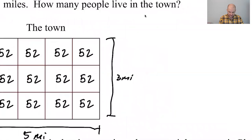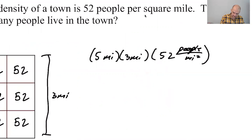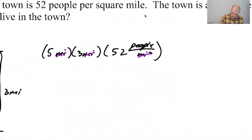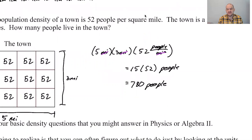So if I want to find the total number of people in this town, I'm going to do five miles times three miles times 52 people per square mile. Look at the units. Follow the units. Miles times miles is miles squared. Cancels with miles squared. We get 15 times 52 people, which is 750 and 30 is 780 people.